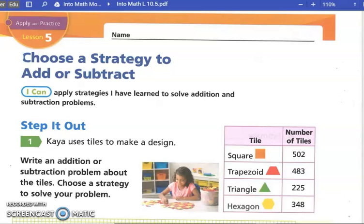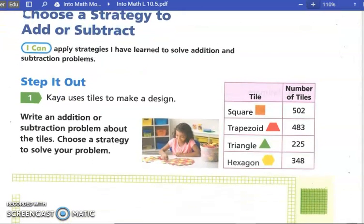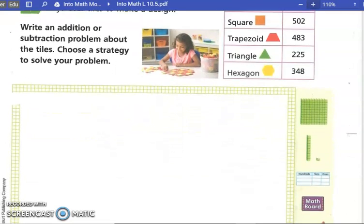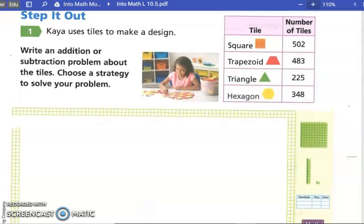We've grouped our tens and ones, or we've grouped our hundreds. So we've learned to do this about four ways. Today it says you're going to choose a strategy. I can apply strategies I have learned to solve addition and subtraction problems. Kaya uses tiles to make a design. Write an addition or subtraction problem about the tiles. Choose a strategy to solve your problem. I think they want me to write like a little word problem for that.